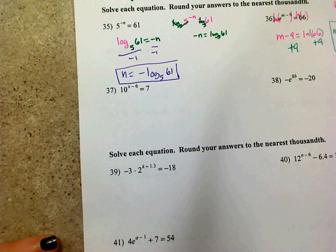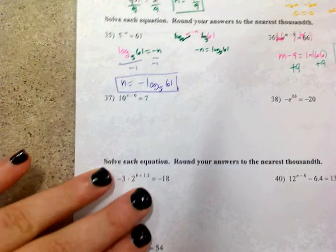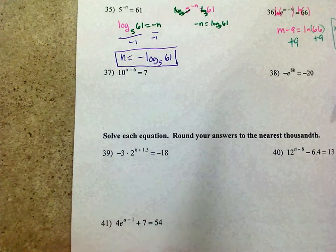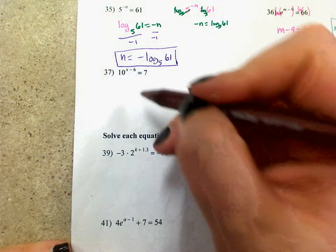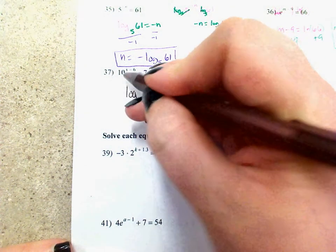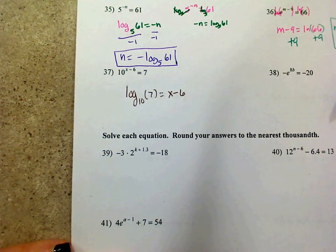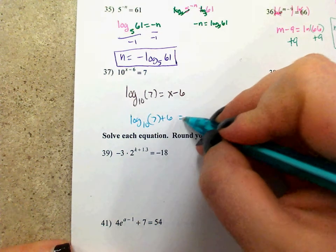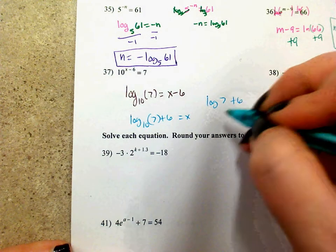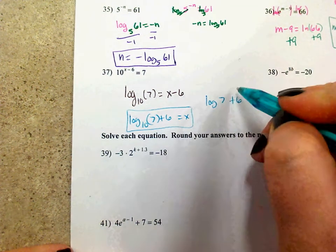On number 37, we've got 10 to the x minus 6 equals 7. I want to undo the exponent — you cannot just divide out the 10, because 10 is being raised to a power. I can convert it to a log, or just take the log base 10 of both sides. Log base 10 of 7 equals x minus 6. Add 6 over, and we're done: x equals log base 10 of 7 plus 6, or just log of 7 plus 6. What you can't write is log of 13.